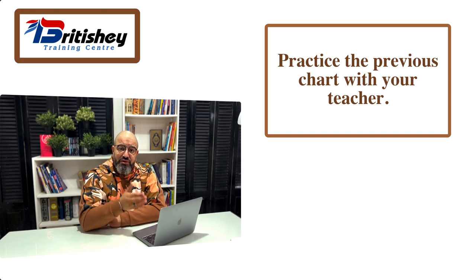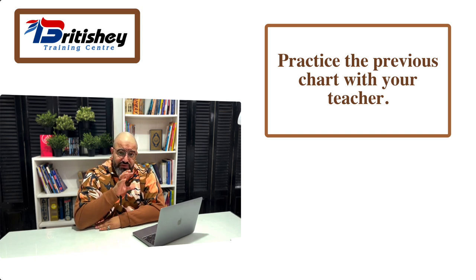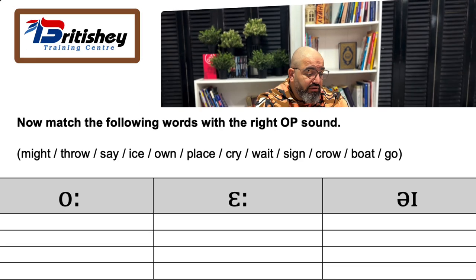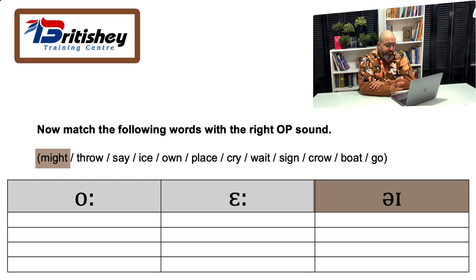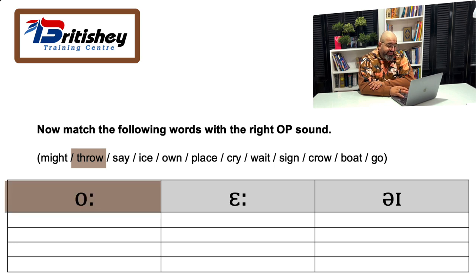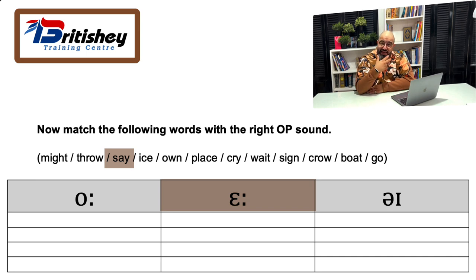The final question in the language focus stage is: 'Match the following words with the right OP sounds.' Students go to a word like 'might' and realize that in OP it's pronounced 'moit,' or 'throw' becomes 'threw,' or 'say' becomes 'soy.' That is how self-directed discovery of Original Pronunciation works through the language focus stage.